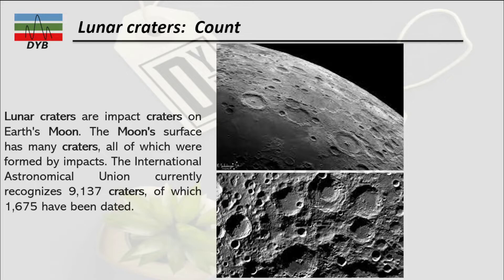Let's look at the count of how many craters we have on the surface of the moon. From these figures you can observe a number of craters. Lunar craters are impact craters on the moon's surface, all of which were formed by meteorite impacts. The International Astronomical Union currently recognizes 9,137 craters, of which 1,675 have been named, dated, and had their sizes calculated.